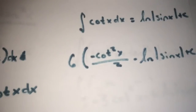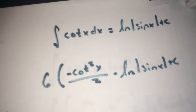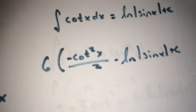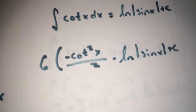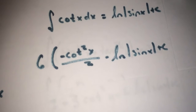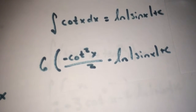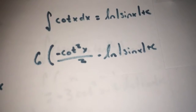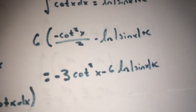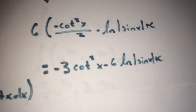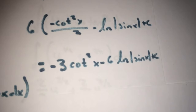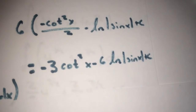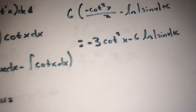Combining both integrals and multiplying by 6: 6 times (negative cotangent squared x over 2 minus ln|sine x|) plus c. Simplifying gives the final answer: negative 3 cotangent squared x minus 6 ln|sine x| plus c.